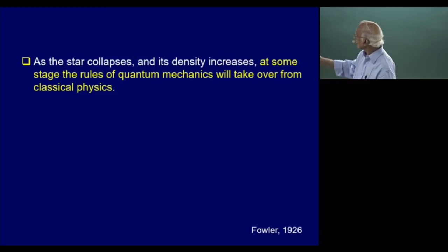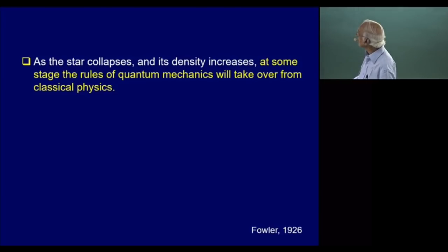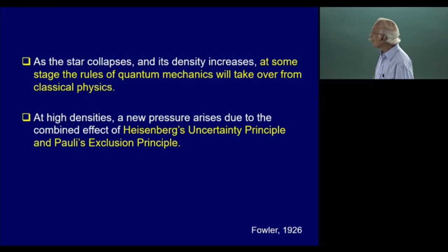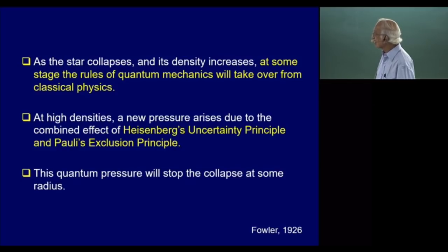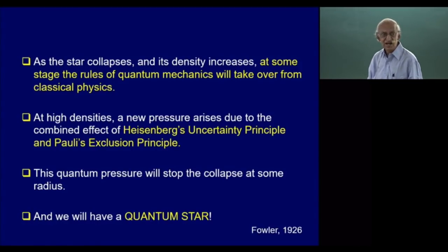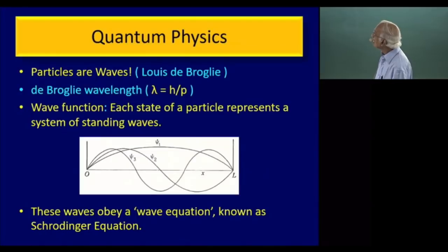What Fowler said was: as the star collapses and its density increases, at some stage the rules of quantum mechanics will take over from classical physics. At high densities, a new pressure arises due to the combined effect of Heisenberg's uncertainty principle and Pauli's exclusion principle. This quantum pressure will, at some stage or other, stop gravitational collapse, and we will have a stable star — the star will now be a quantum star. An absolutely remarkable statement.